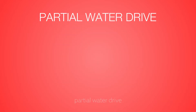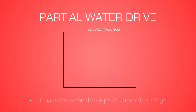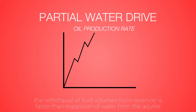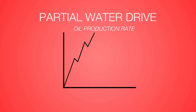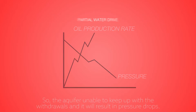Partial water drive happens when the oil production rate is high. The withdrawal of fluid volume from the reservoir is faster than the expansion of water from the aquifer, so the aquifer is unable to keep up with the withdrawals and it will result in a pressure drop.